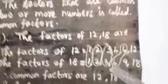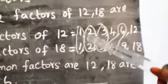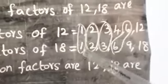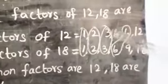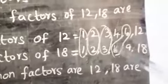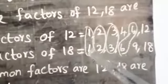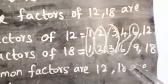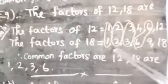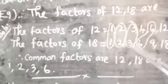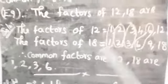Therefore, the common factors — just write the factors that are the same in both numbers. Here one and one are the same, two and two are the same, three and three are the same, six and six are the same. Therefore the common factors of 12 and 18 are: one, two, three, and six.